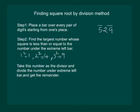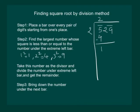Then we have to divide 5 by 2. We will get 2 into 4 which gives us 1 as remainder. Step 3 is to bring down the number under the next bar. So let us bring down 29. Now we have 129.